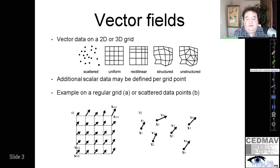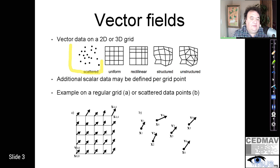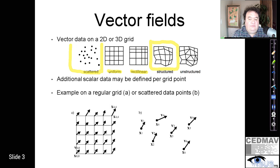Vector fields, similar to scalar fields, can be represented on a variety of domain models. They can be sampled on a scattered set of points, on uniform grids, on rectilinear but non-uniform grids, on logically structured meshes where every element can be stored in a logical array, or fully unstructured meshes where you have a mix of triangles, quadrilaterals, and other shapes that require a more expensive representation model.